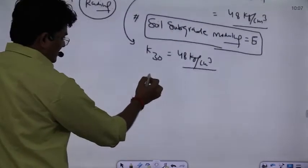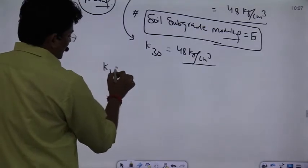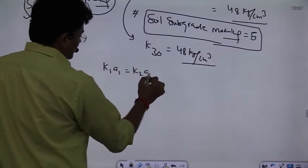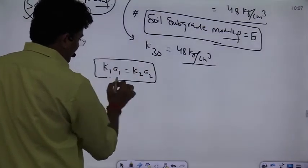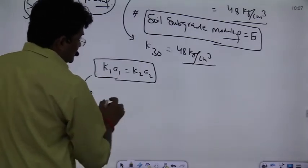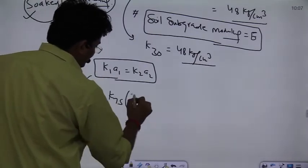In plate load test, for the radius, the formula is k₁ × a₁ is equal to k₂ × a₂. We have seen this in the class. So let's write here k₇₅ multiplied by